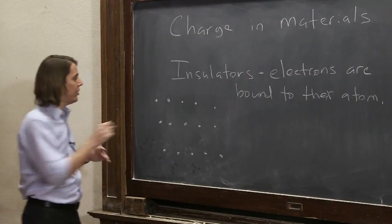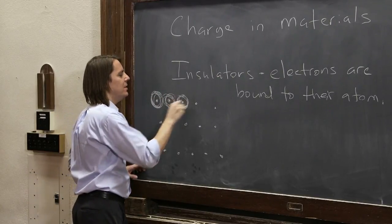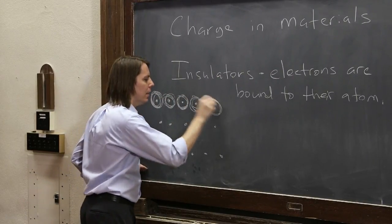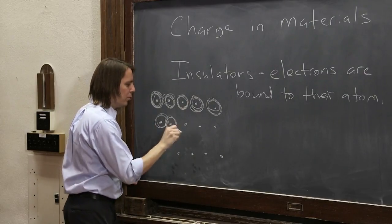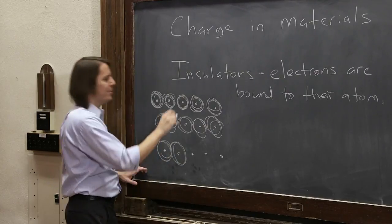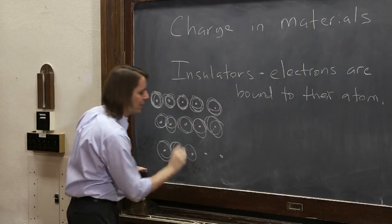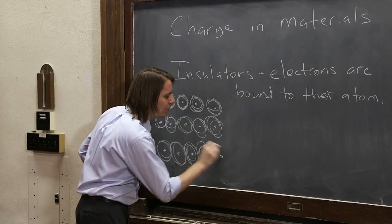And the electrons are stuck with their atom. So they go around in a cloud like that, and they can't leave. And I've drawn way too many of them. Now it is true they can interact. So a chemical bond is these two electrons talking to each other. So there can be forces between them, and they can create bonds, but they can't really go anywhere.